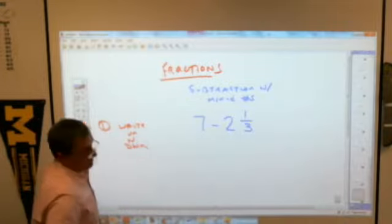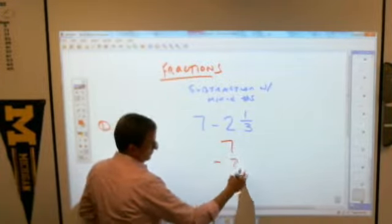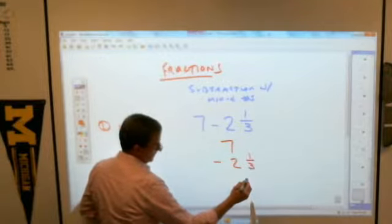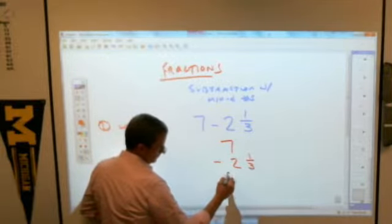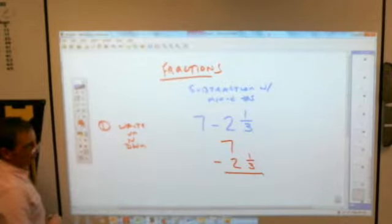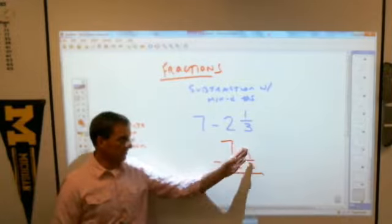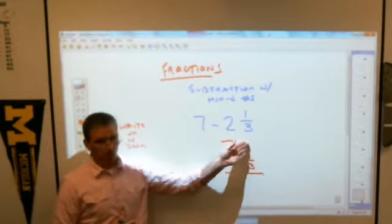By the way, other teachers may not care. I do on this one. So, 7 minus 2 and 1 third. And here is where things kind of hit the brakes there, because you will notice that I don't have a fraction next to 7. I can't take 1 third away from nothing.